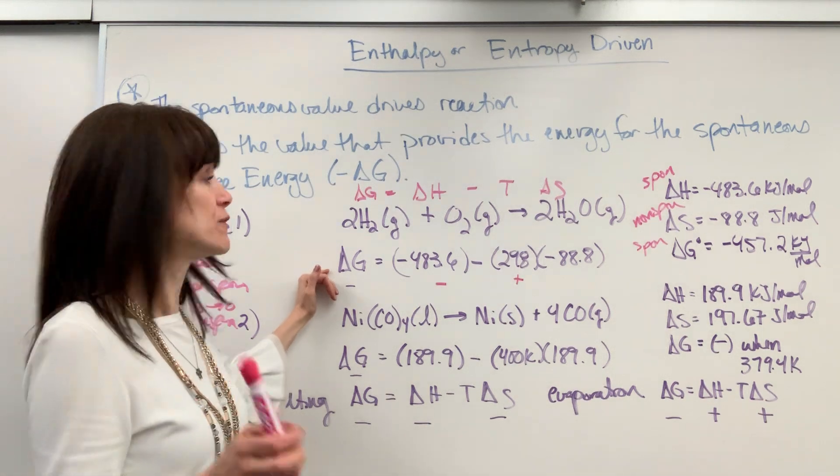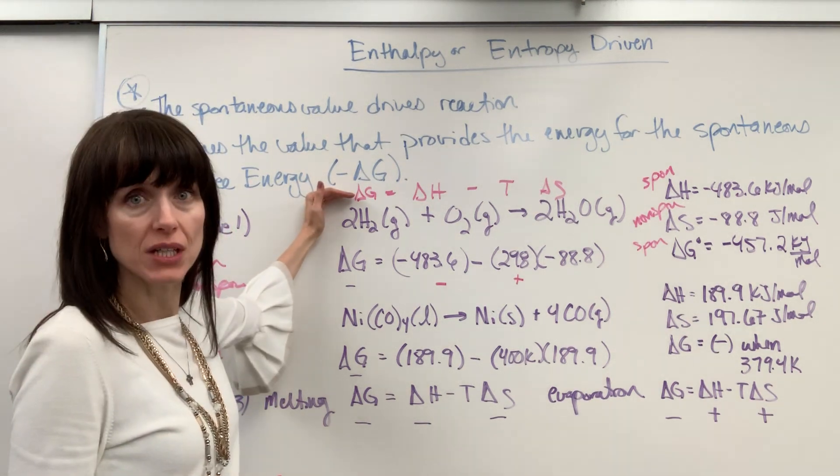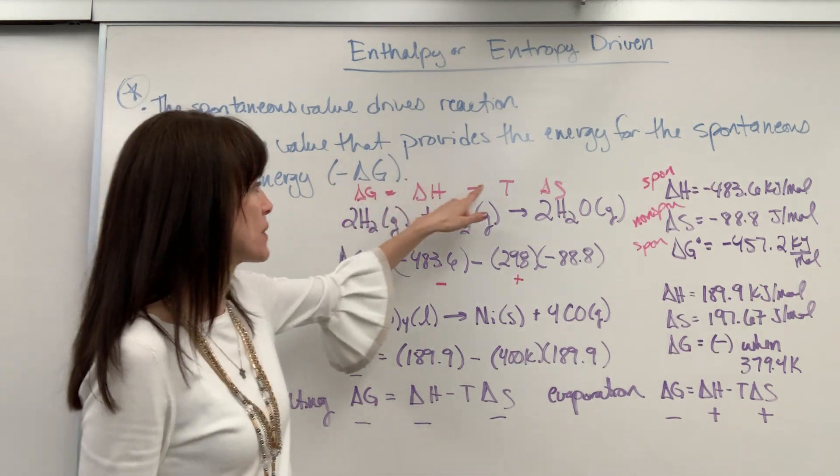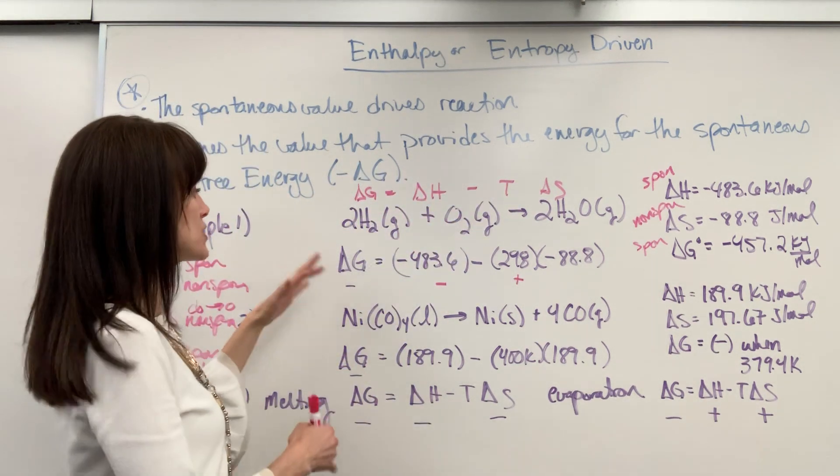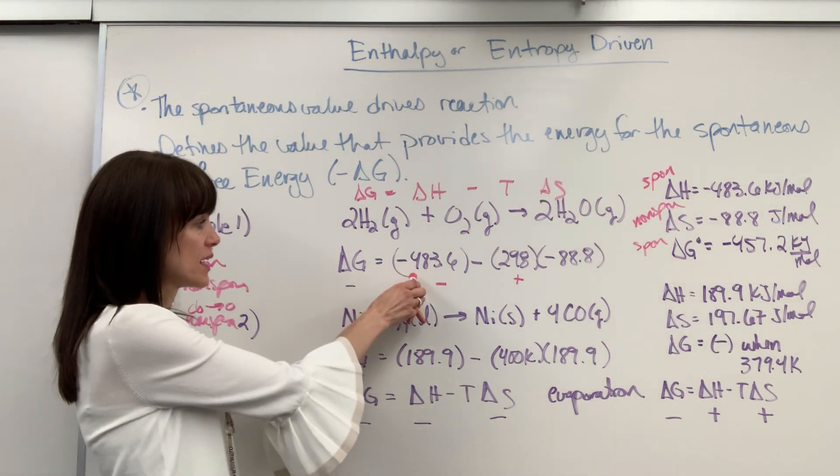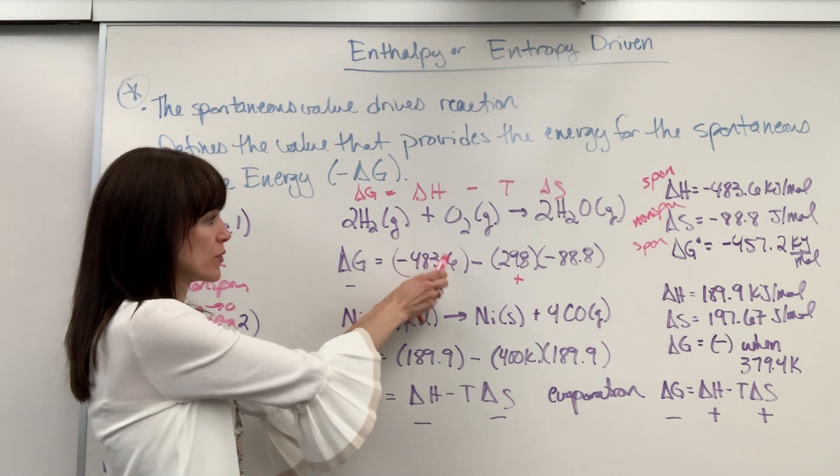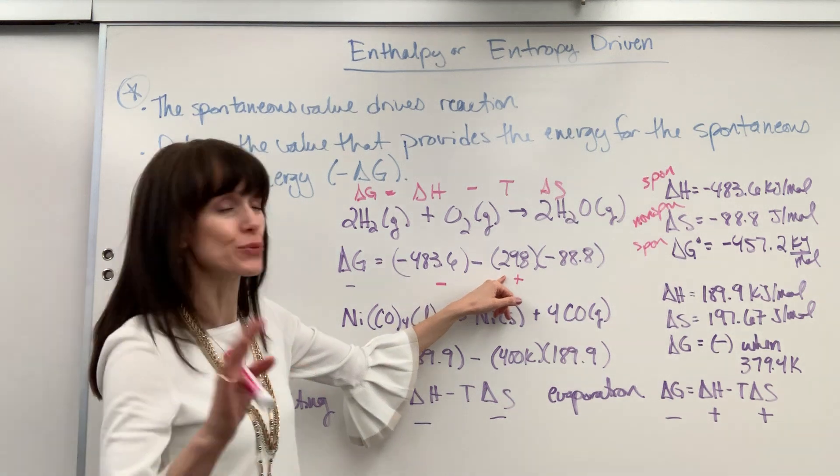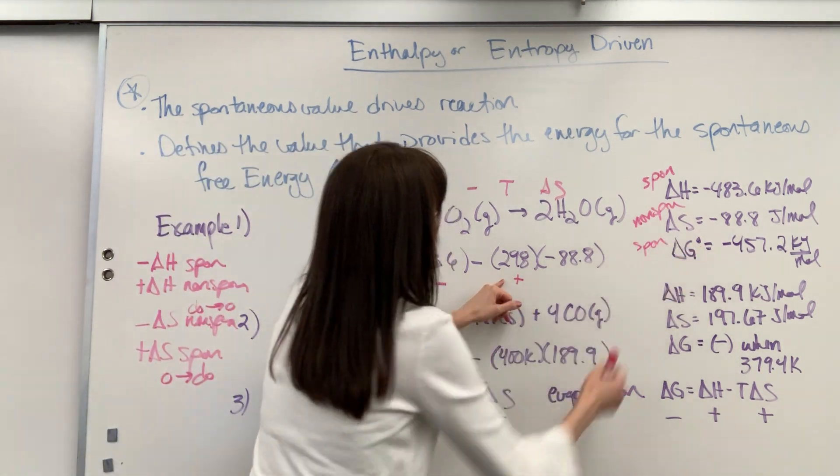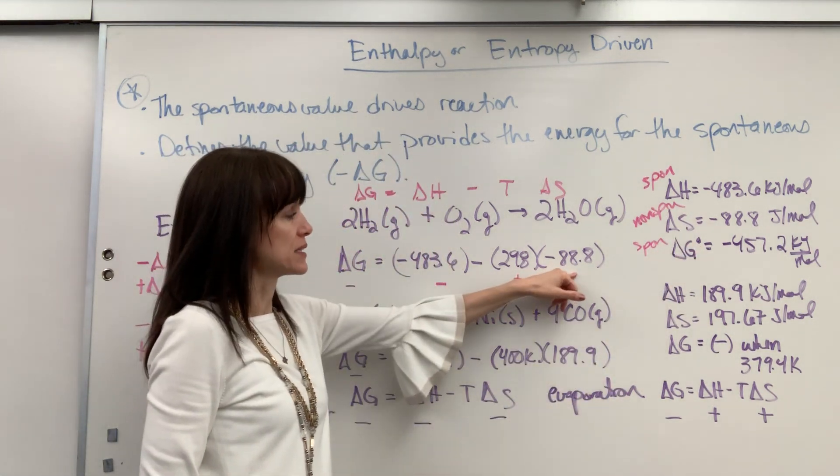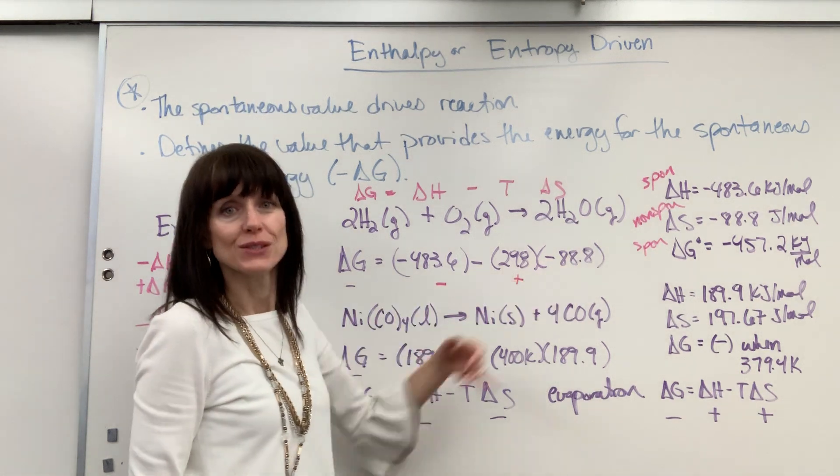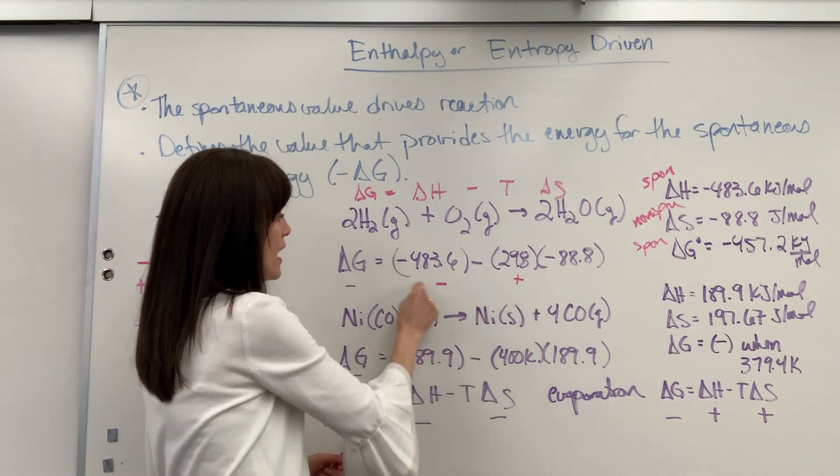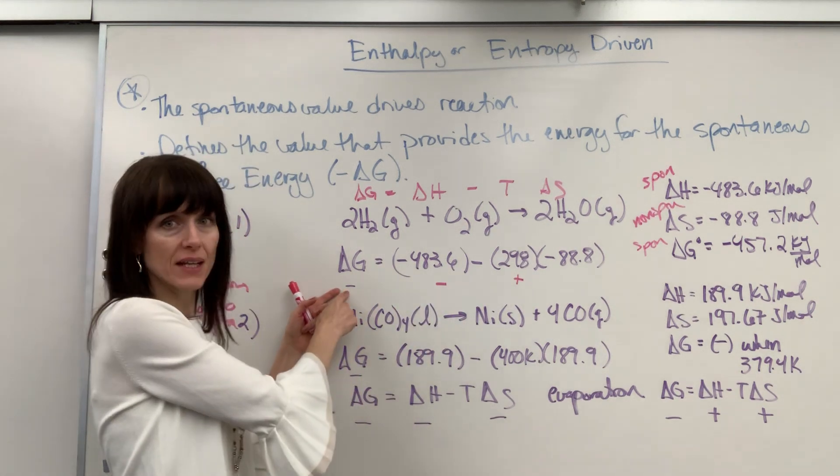And so I want to know what's driving this, what's making this ultimately a negative delta G, spontaneous, we have some energy to do work. Well, it's easiest to see this if you set it up into Gibbs free energy equation. Delta G equals delta H minus T delta S. So I'm going to plug in my numbers. You've got delta H negative 43.6 minus the temperature, which was at 25 degrees C. I know that because of the knot, 298, and delta S negative 88.8. So look at the signs. Negative times negative gives me a positive. I have my negative. What's going to provide the negative here?